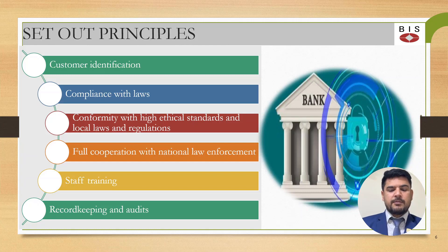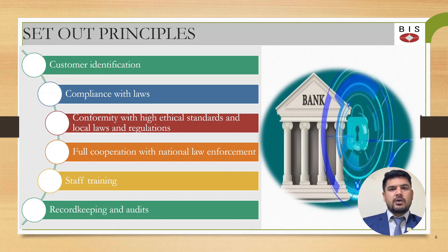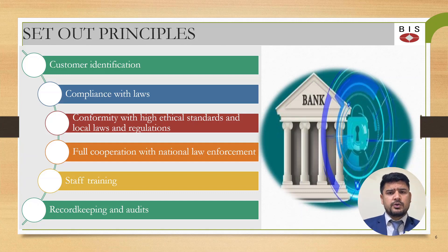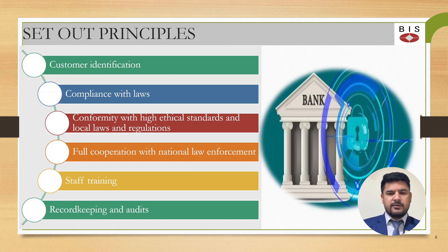The last principle is record keeping and audit. In different jurisdictions there are different standards — for example, in Hong Kong, seven years of record keeping is required. International bodies like FATF require at least five years from the date of the transaction or from the date of customer registration. Audit is also important: if there is no audit, how can we rectify mistakes? The auditor should be independent, without any influence, so we can rectify issues and improve our organization over time.